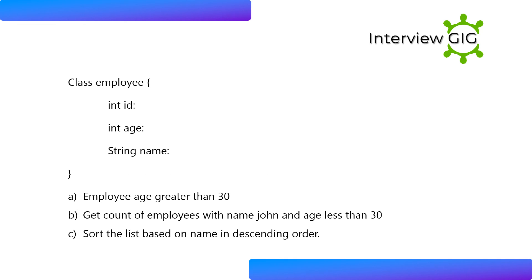Class Employee with fields: int id, int age, String name. Write stream operations for: A. Get employees with age greater than 30. B. Get count of employees with name 'John' and age less than 30. C. Sort the list based on name in descending order.